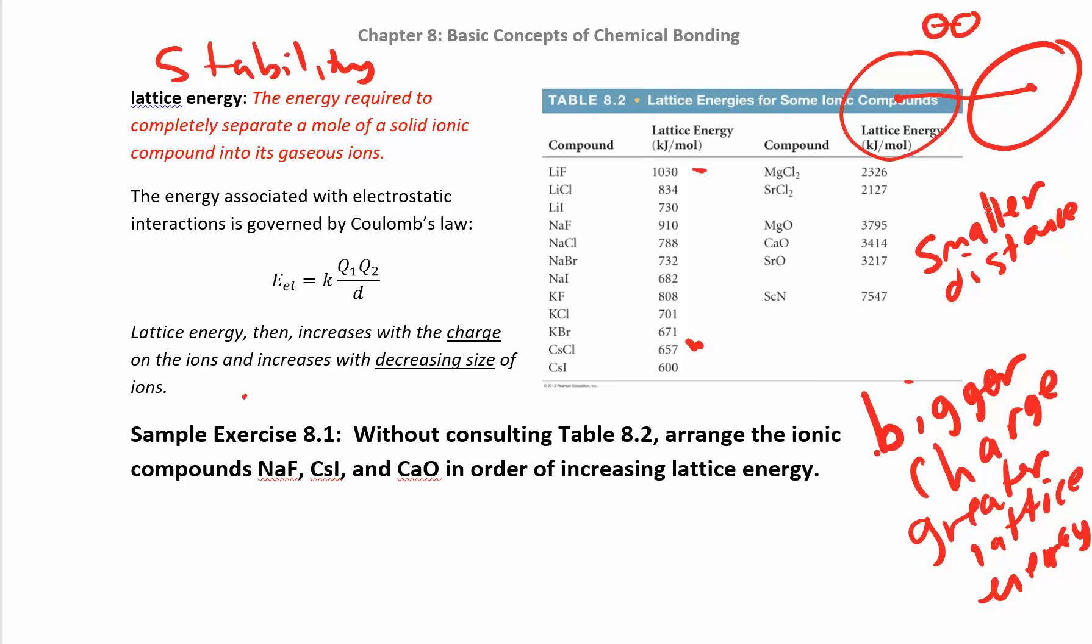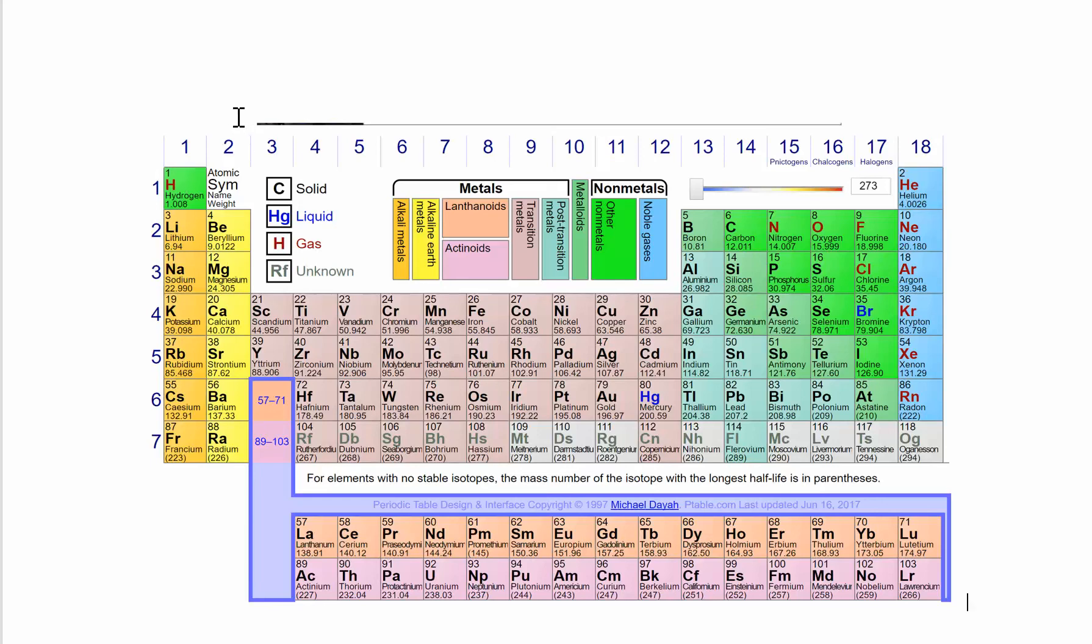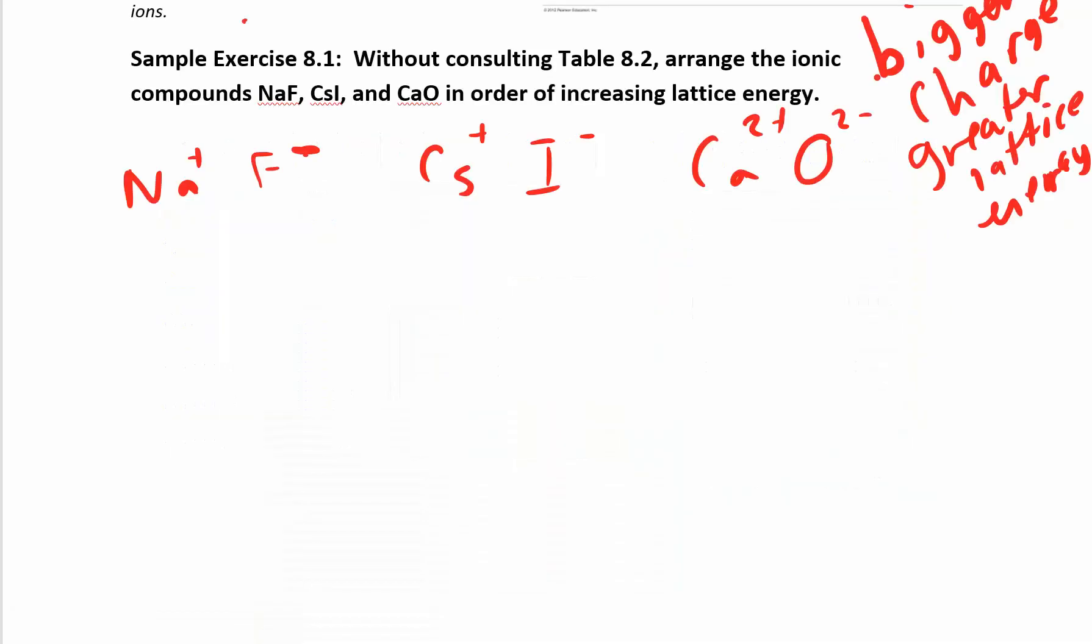In this next example, without looking at the table, can we arrange these compounds in order of increasing lattice energy? We'll look at sodium fluoride, CsI, and CaO. Sodium has a plus one charge and the fluoride ion is minus one. So we're going to look at charges first. Cs has a plus one charge. I has a minus one. Then calcium has plus two, and O is two minus. If you can't remember how to get these charges, look at the periodic table. Everybody in group one is plus one. Everybody in group two is plus two. Oxygen has a minus two, fluoride and iodide are minus one.